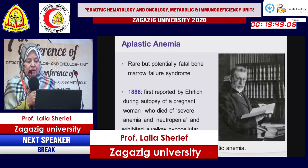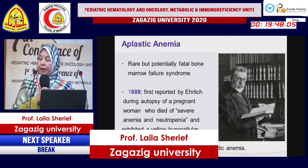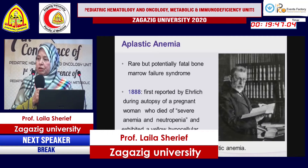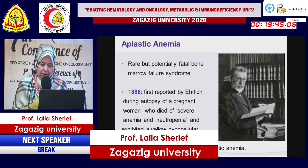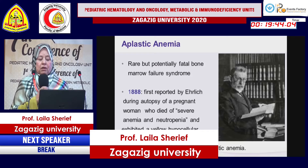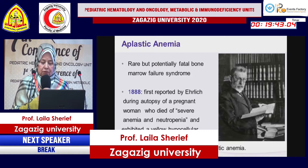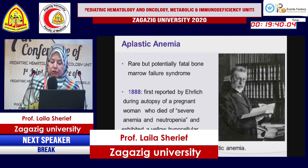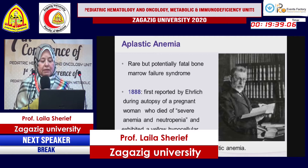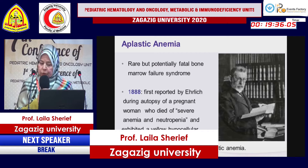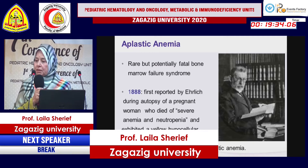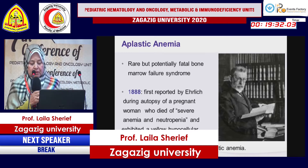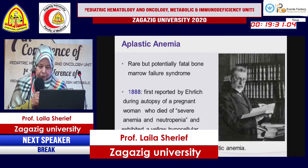Aplastic anemia was first discovered by Ehrlich, a famous pathologist, based on a woman who died of severe anemia and neutropenia and exhibited a yellow hypocellular bone marrow. The term aplastic anemia was coined in 1904.